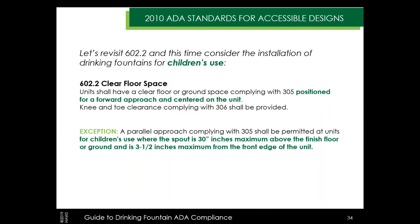Back to children's use — Section 602.2 gives us a maximum bubbler height of 30 inches and a 3.5-inch maximum depth for the bubbler from the front edge of the fountain. This allows us to forego the knee and toe clearance so we can lower the fountain where users are intended to be children, but a parallel approach and space for that must still be available. Many states have their own requirements for children's height and approach preference, so be sure to reference those local requirements.